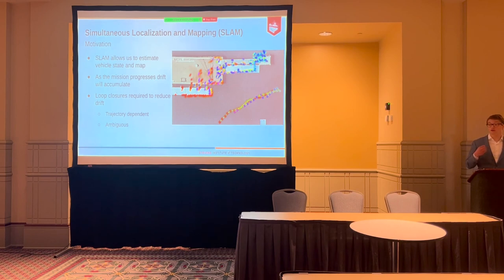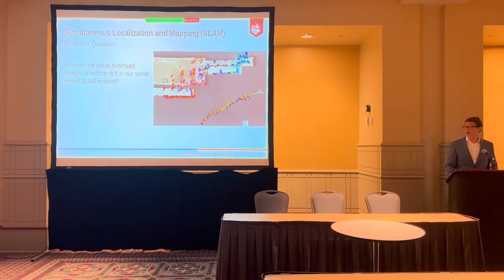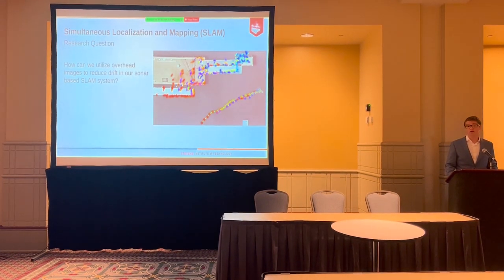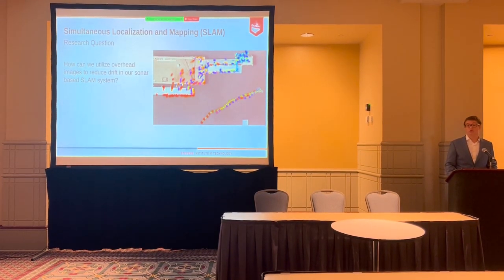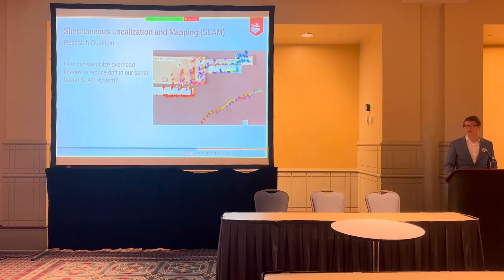We need loop closures to minimize this drift. However, these are trajectory dependent and often ambiguous. So the research question in this work is: how can we use overhead images to minimize the drift in our sonar-based SLAM system?